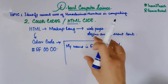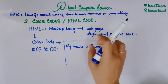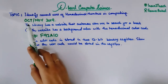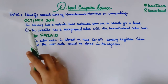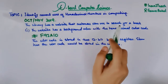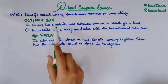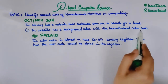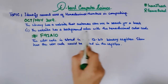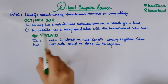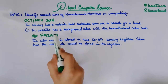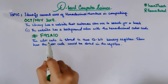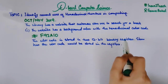Let me share a past paper example so you can be more clear about it. This is from the October/November 2019 paper. A library has a website that customers can use to search for a book. The website has a background color with a given hexadecimal color code. The color code is stored in two 12-bit binary registers.